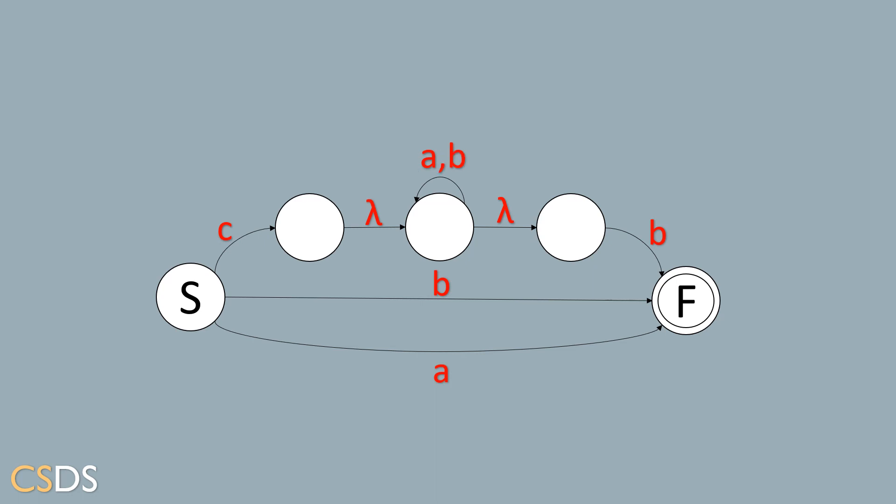So after representing the self-transition a plus b in the following manner, we have achieved our final automata, which represents the regular expression we were given at the beginning of the example.